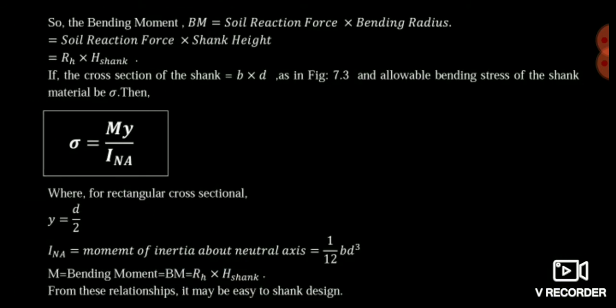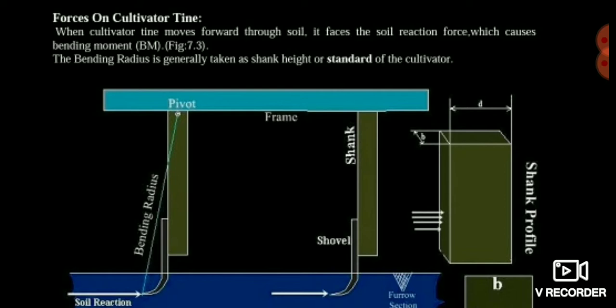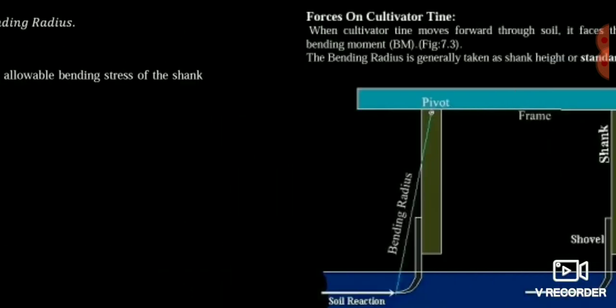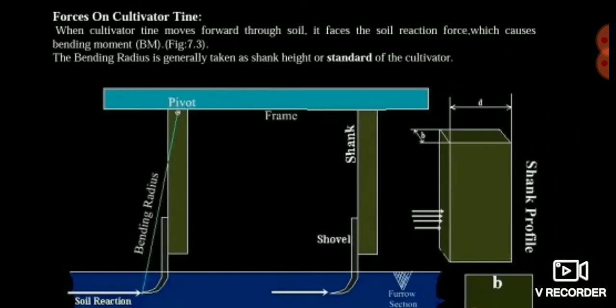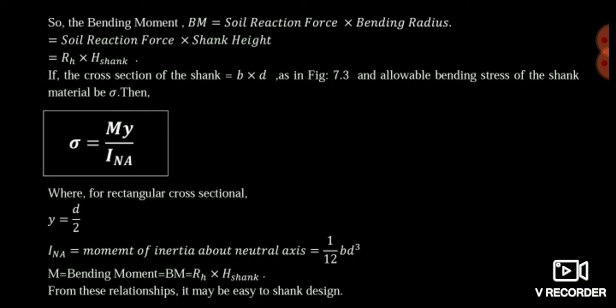The bending moment is simply the soil reaction force multiplied by the bending radius. The bending radius is simply the sank height. The green-colored portion shown here is the sank. So, bending moment is simply the soil reaction acting at the bottom multiplied by the sank height.